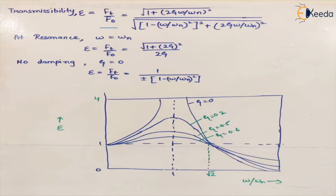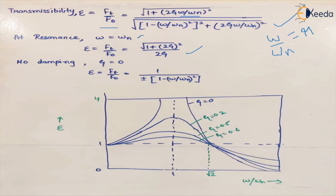The transmissibility ε = Ft/F₀ is given by a formula involving the damping factor ζ and frequency ratio r = ω/ωₙ, where ωₙ is the natural frequency. At the resonance condition ω = ωₙ, the formula simplifies so that ε depends only on ζ. When there is no damping (ζ = 0), ε becomes 1/(1 − (ω/ωₙ)²).